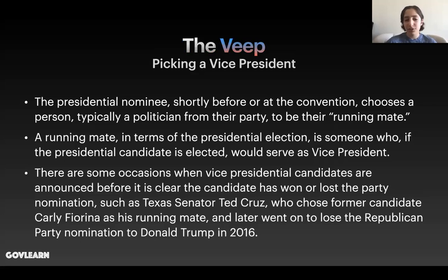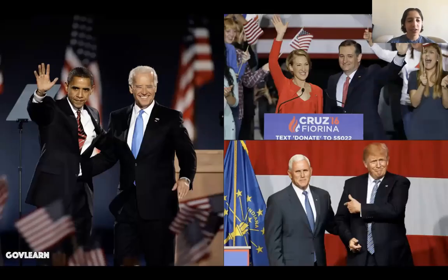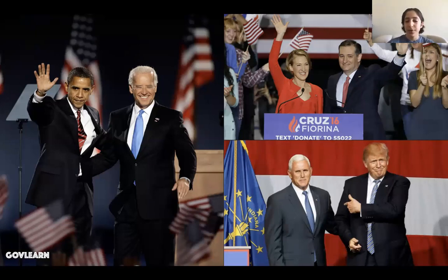Either before or at the party convention, the presidential candidate chooses a running mate — the person they would pick to be their vice presidential candidate. A running mate, if that candidate is elected, would serve as vice president or second-in-command. There have been some occasions when vice presidential candidates are announced before it is clear that a candidate has won the party's nomination, such as in 2016 when Texas Senator Ted Cruz chose former 2016 candidate Carly Fiorina as his running mate, but later went on to lose the Republican nomination to Donald Trump. On the left you see that in 2008, Barack Obama picked Senator Joe Biden to be his vice presidential nominee. On the top right you see Ted Cruz and Carly Fiorina, and on the bottom right you can see current President and Vice President Donald Trump and Mike Pence.